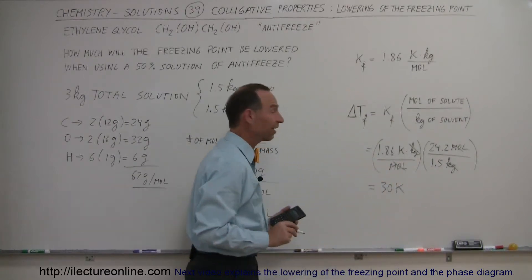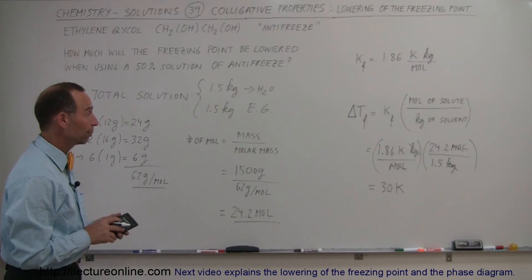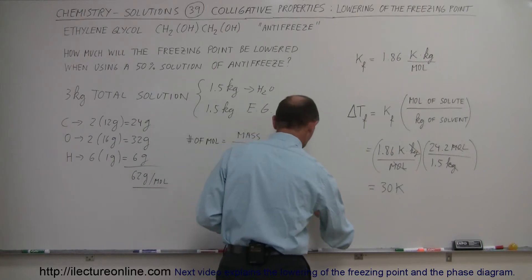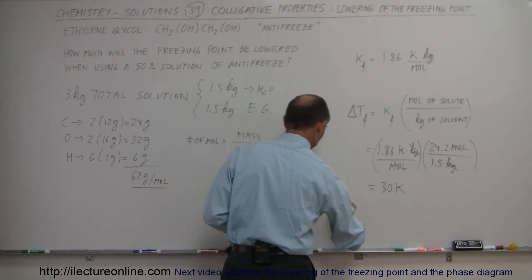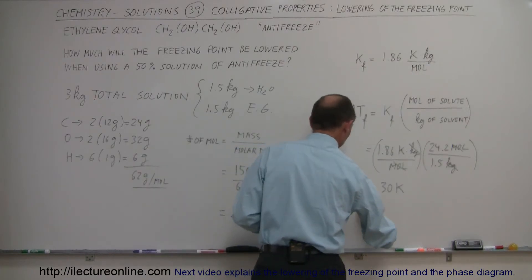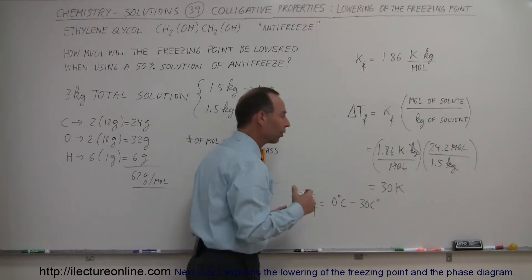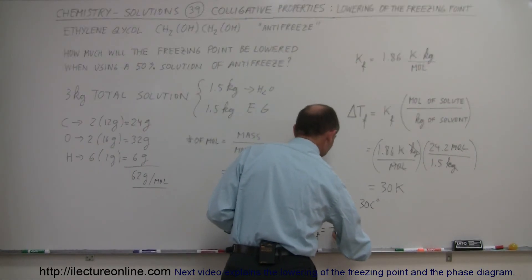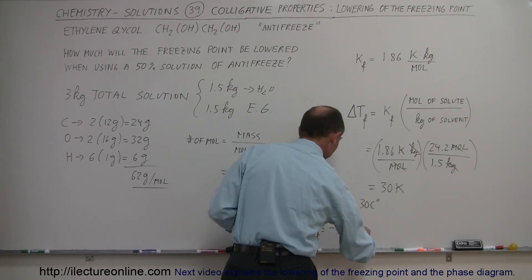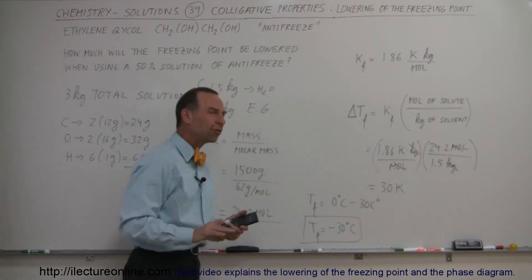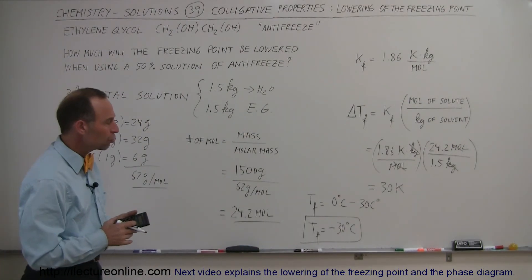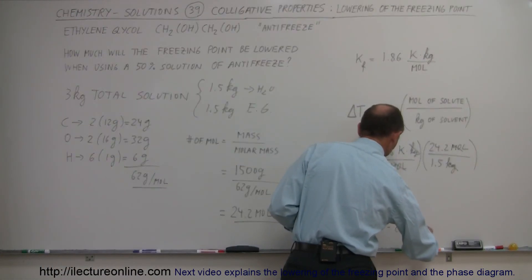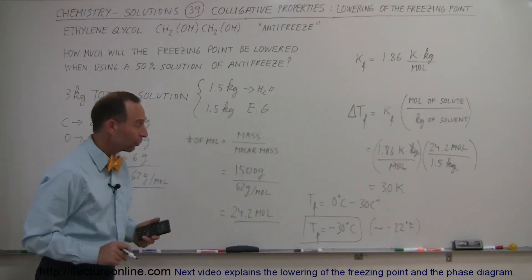That's a significant lowering of the temperature. When we add that to the number that it normally is, the temperature for freezing will be equal to the original temperature, which is 0 degrees centigrade, minus 30 centigrade degrees. So 30 Kelvin is the same as saying 30 centigrade degrees, which means the new freezing point would be about minus 30 degrees centigrade. Minus 30 degrees centigrade is roughly about minus 22 Fahrenheit. That would be pretty good for most places in the world in the wintertime.